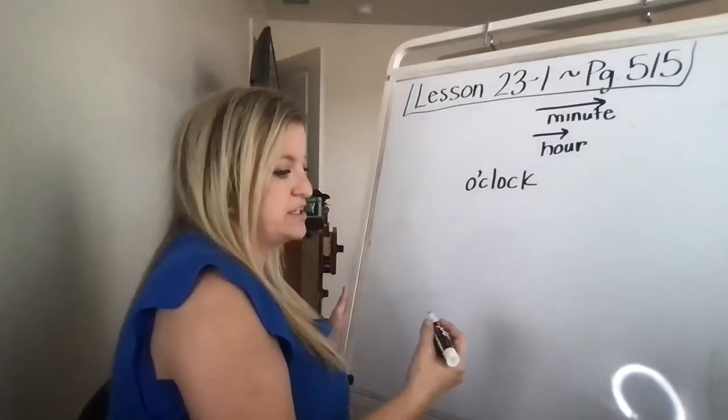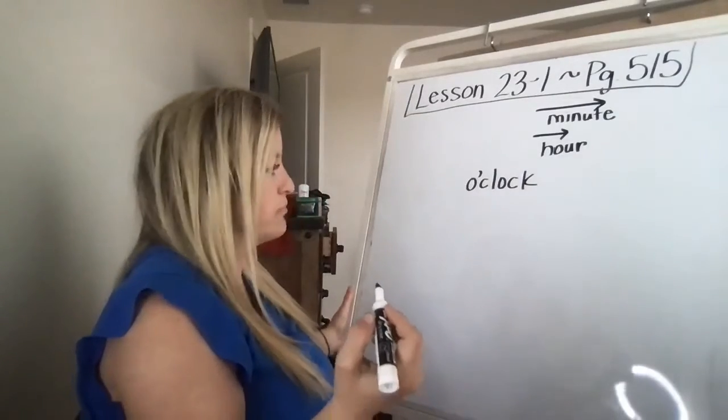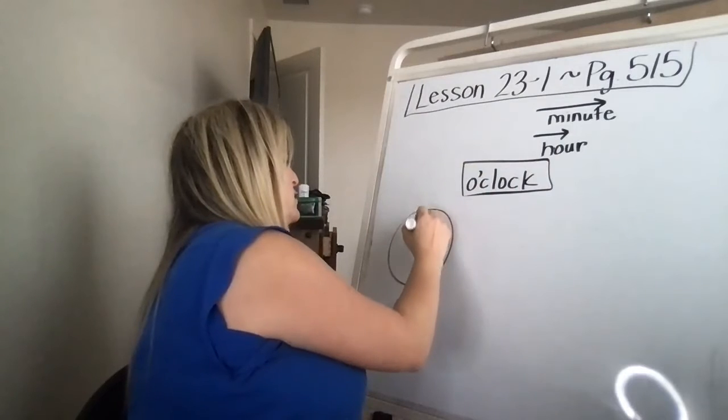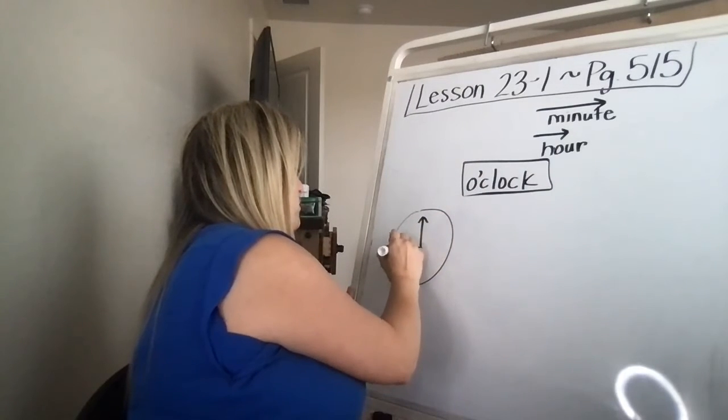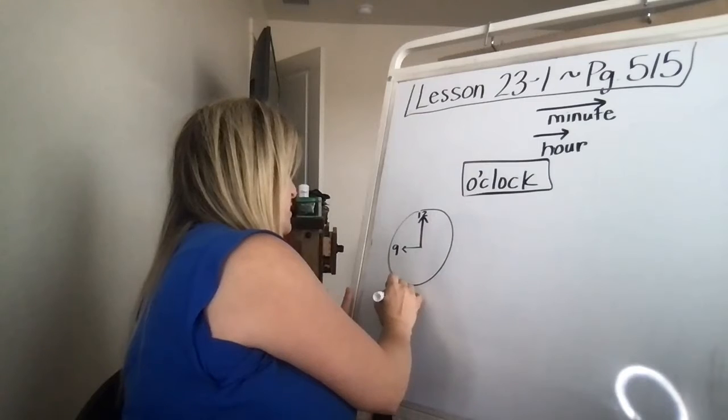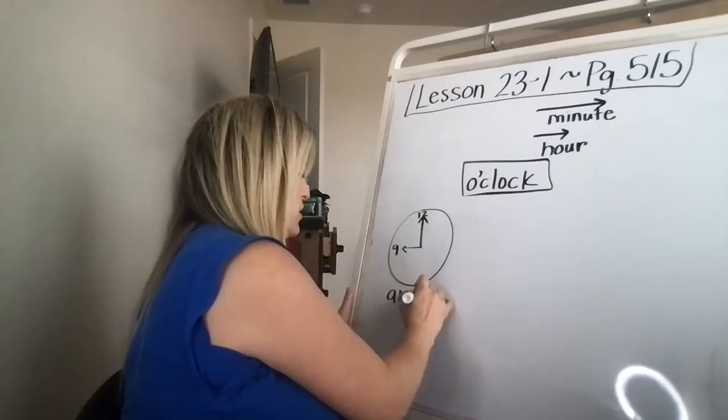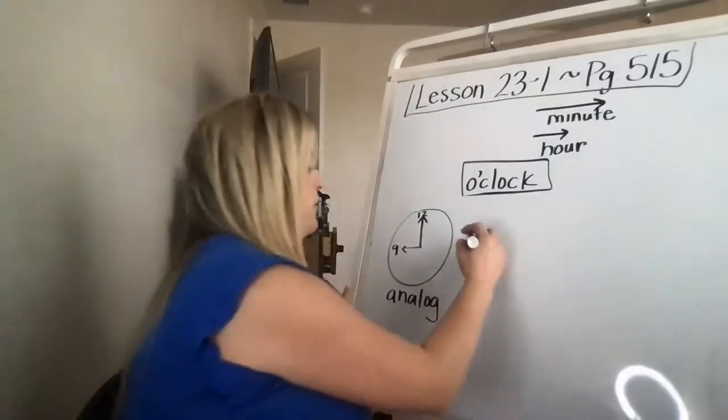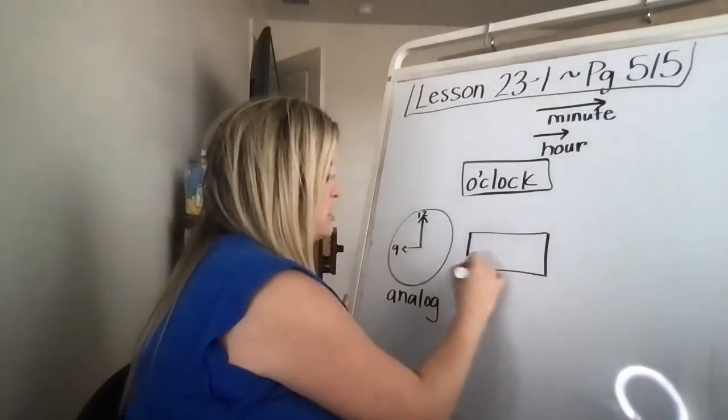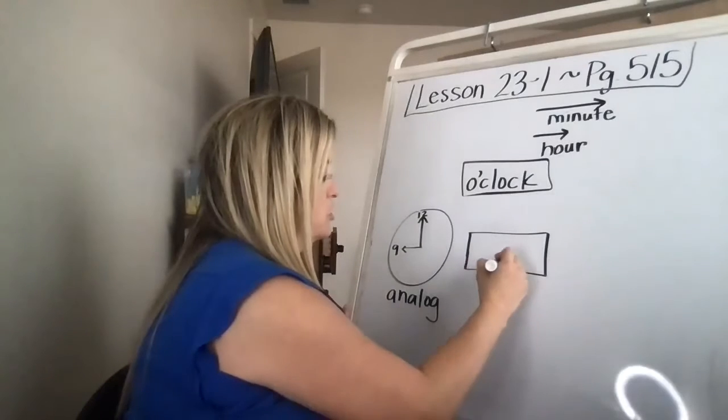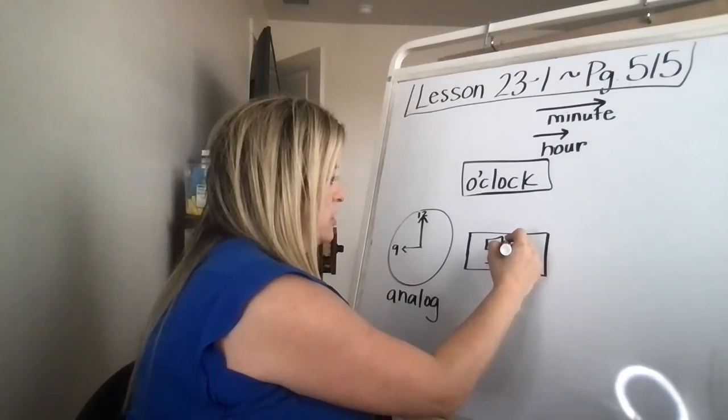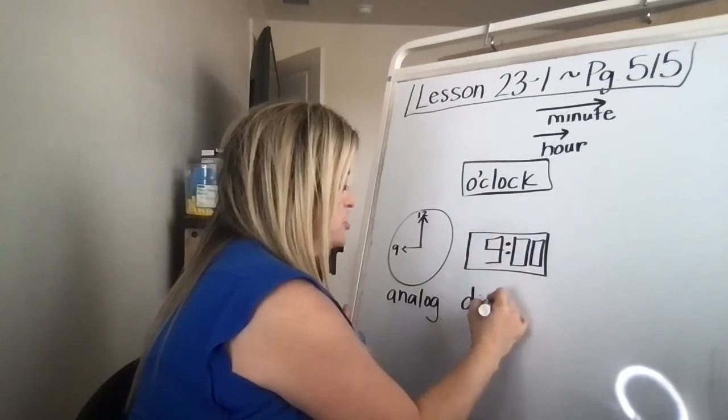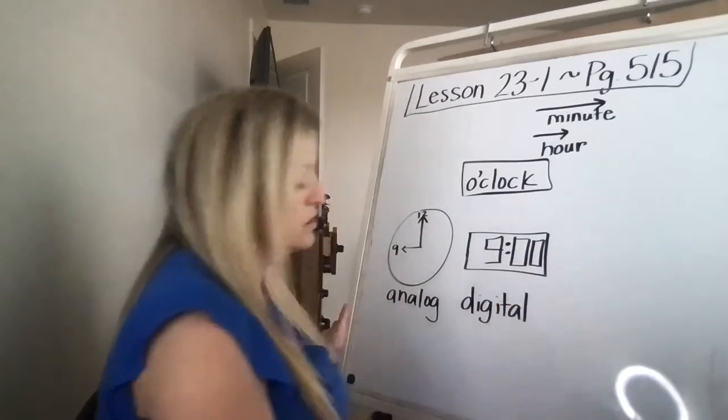Now in the past, we had done, we had learned about two different types of clocks. We had learned about this clock, which is an analog clock. So this is nine o'clock on an analog clock. Then we could also show nine o'clock on a digital clock. Some of you guys might have alarm clocks in home. And this is a digital clock.